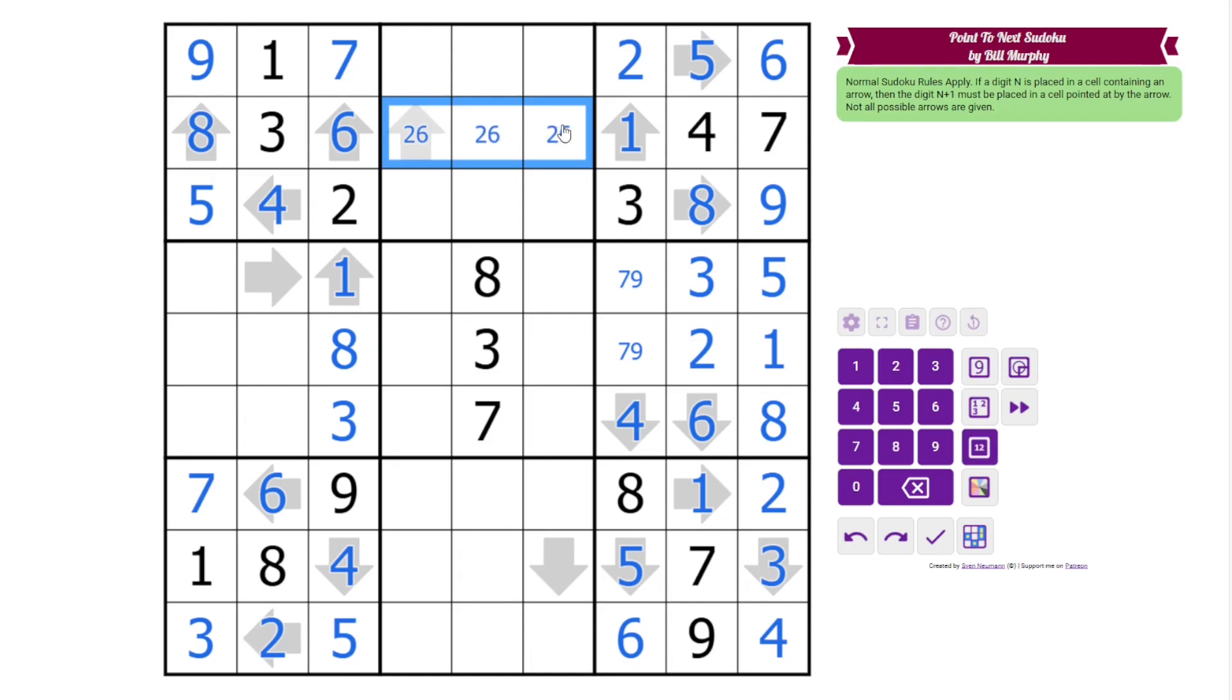All right, up here we have 2, 5, and 9. This can't be 9 because of the arrow. These are 3, 4, and 8. And now this can't be 5, it must be 2, 3. And the 8 resolves 4, 8 here. These are 1, 6, 7.